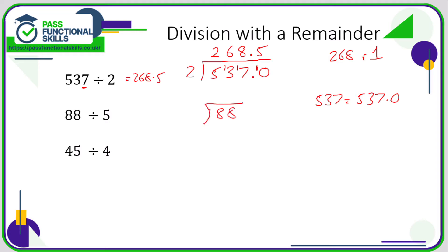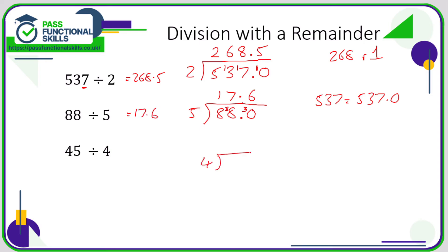88 divided by 5: 8 divided by 5 is 1 remainder 3. 38 divided by 5 is 7 remainder 3. It looks like we've come to the end, but if I put in a decimal point and a zero — and a decimal point above — I can park that remainder of 3 next to the 0. 5s into 30 is 6. So the answer is 17.6.